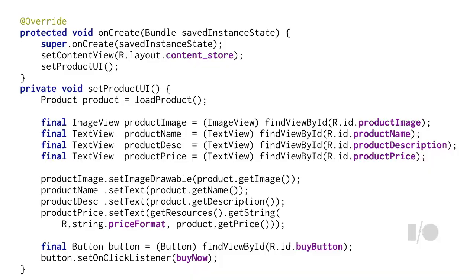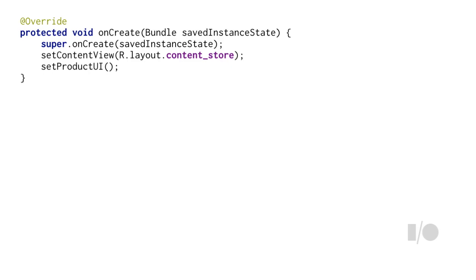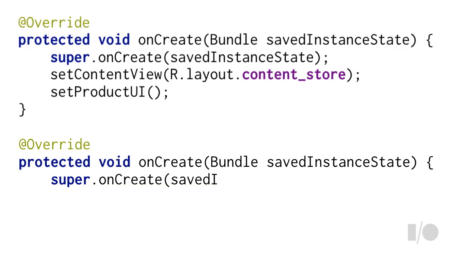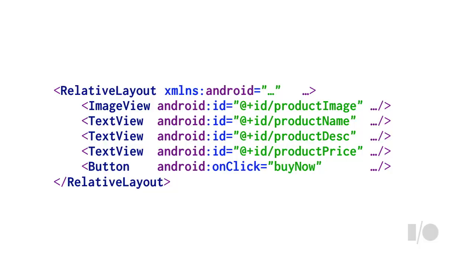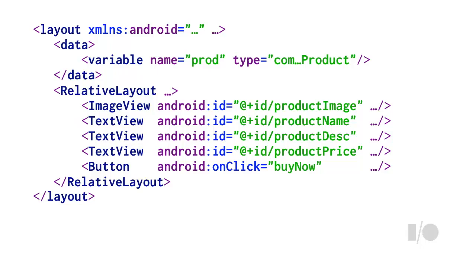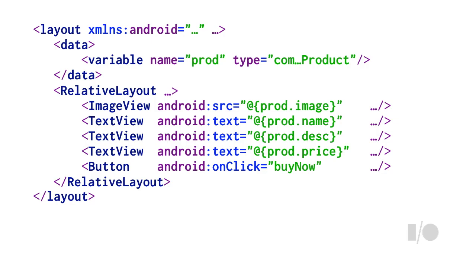So we introduced Android data binding to get rid of all that setter logic. FindViewById really is lousy. Instead of calling setContentView, we call a different version that creates a data binding, and then we set the data object on that binding. We also modify our layout: add a layout tag on the outside, move namespace declarations up, and add a data tag with the variables we're going to use — in this case, 'prod' for our product. Then we assign values directly to views using the at-curly-brace syntax to denote data-bound tags.